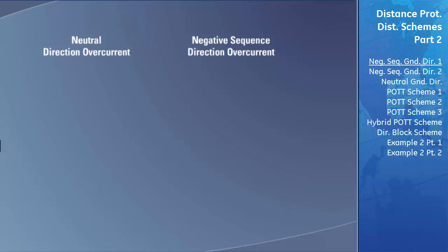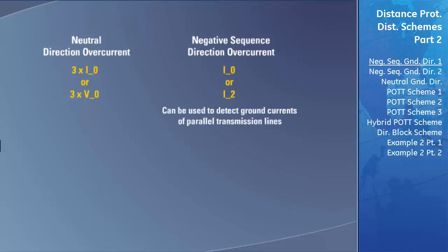There are two different methods of detecting the direction of ground current flow in the D60: the negative-sequence-directional overcurrent element and the neutral-directional overcurrent element. Of these two methods, the neutral-directional overcurrent element is more sensitive because the magnitude of the neutral current used for its directional calculations is greater than the negative- or zero-sequence currents used for the negative-sequence-directional overcurrent element.